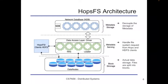This brings us to the next phase of file systems. HopsFS is a distribution of the Hadoop file system designed to tackle the limitations and shortcomings of HDFS. This is done primarily by replacing the single metadata architecture with distributed metadata. The main subdivisions of HopsFS are the metadata storage layer, which consists of the network database called NDB, the metadata serving layer, and the block storage.